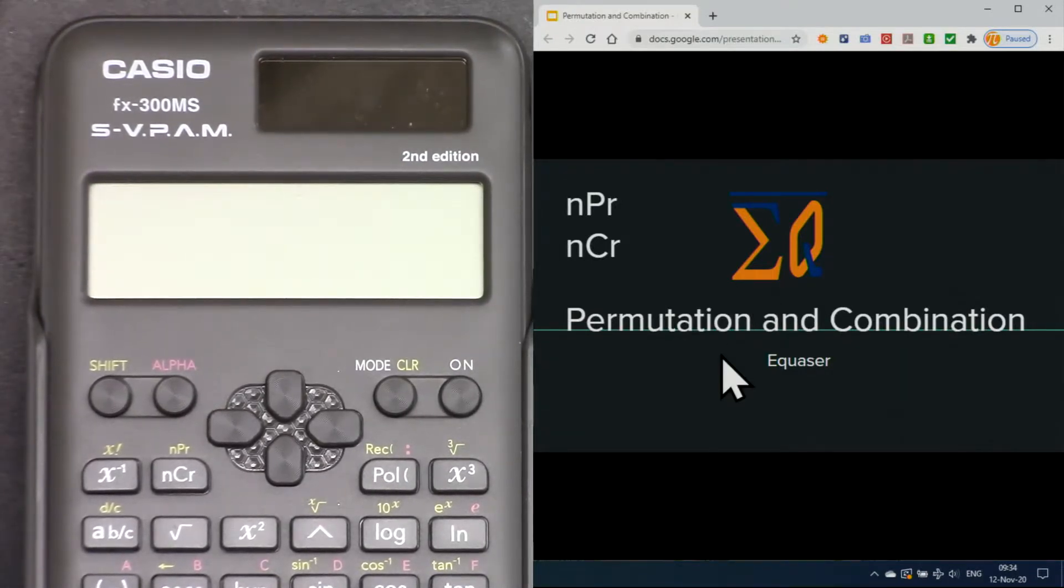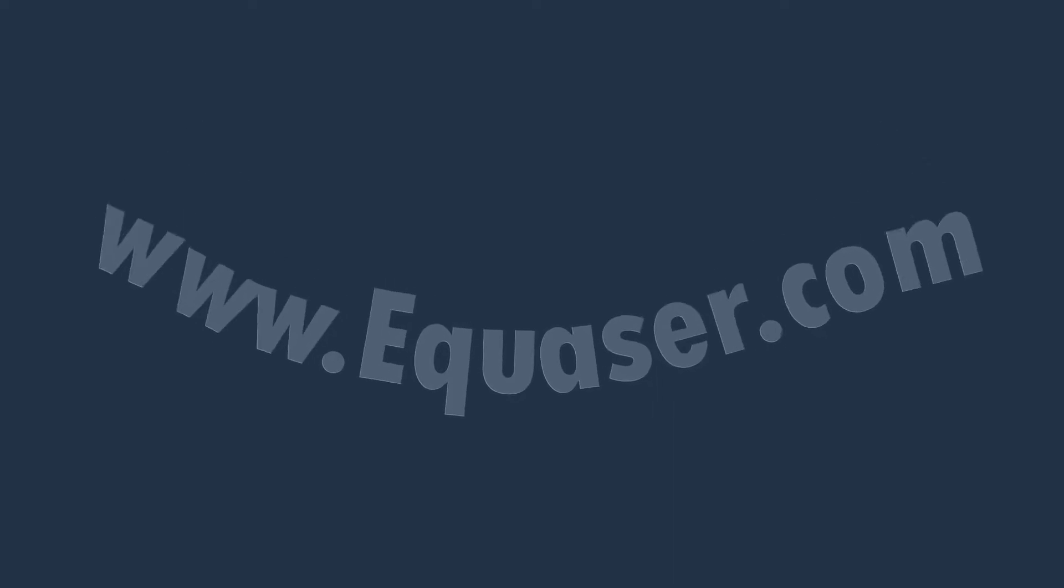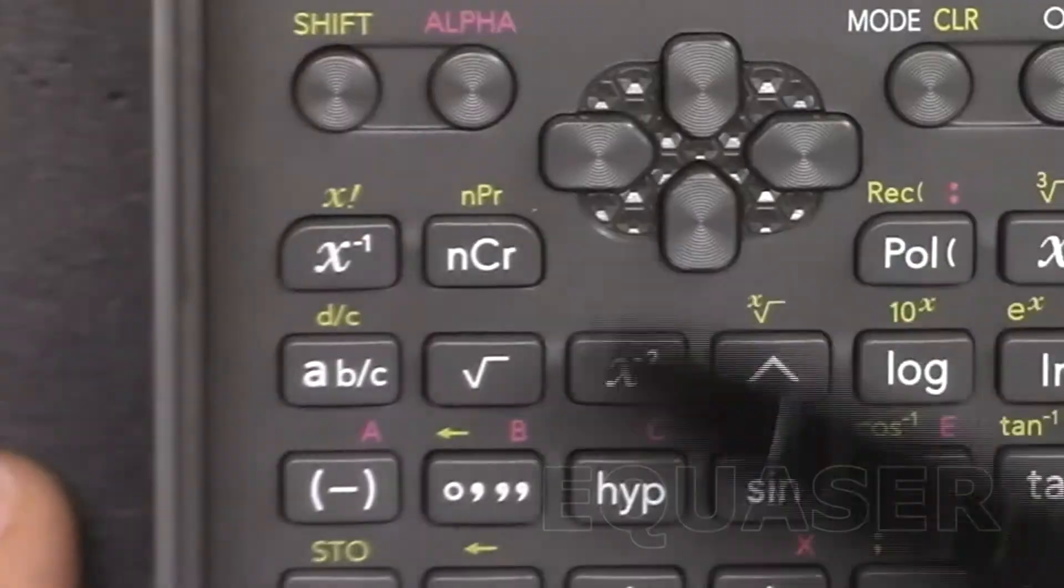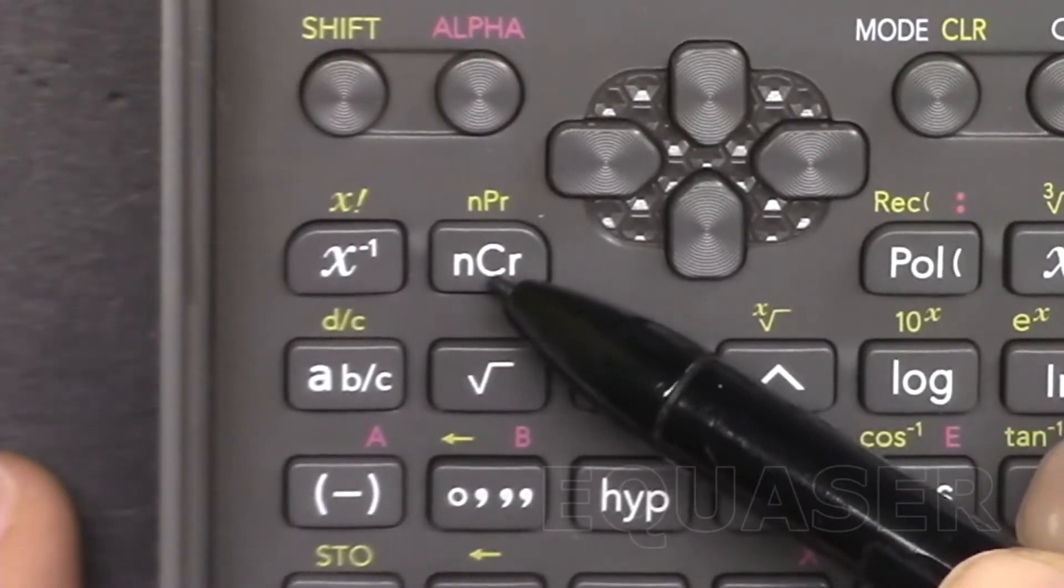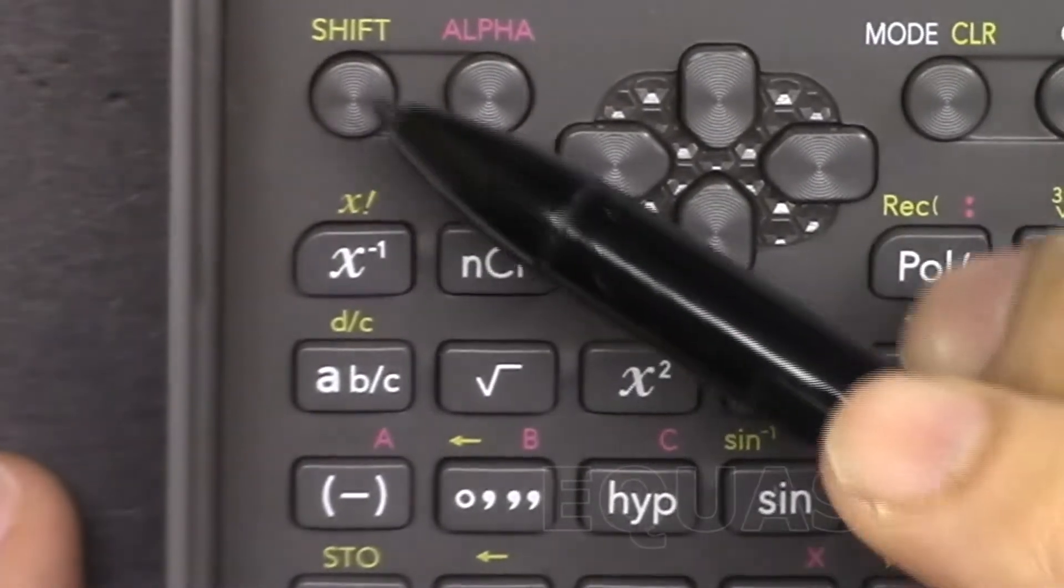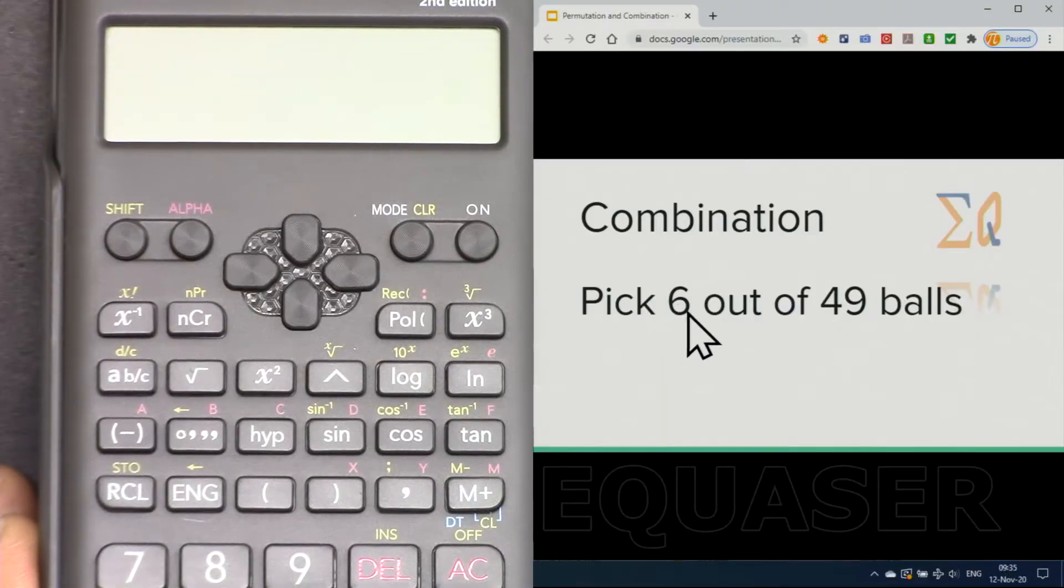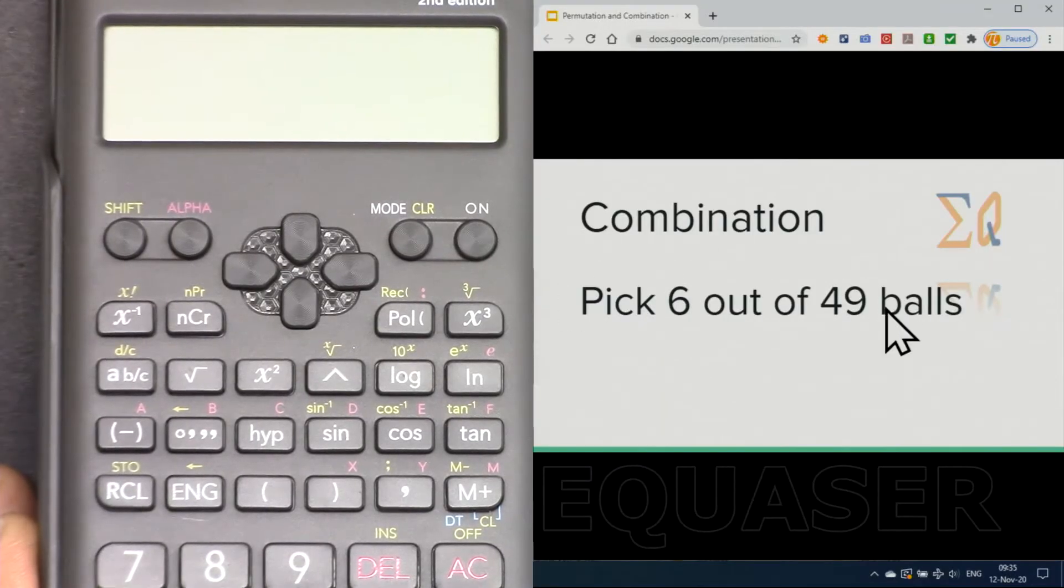Let's get started. For permutation and combination we are using these buttons. This is for combination—we just press it directly. For permutation we press shift and this button. Here's the question: if we pick 6 out of 49 balls, find the combination.